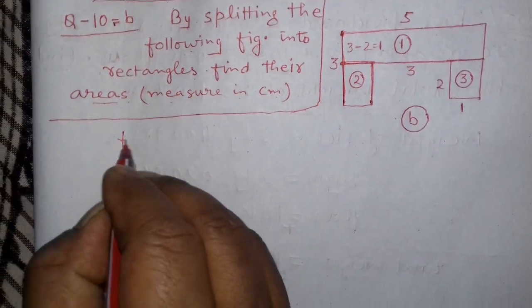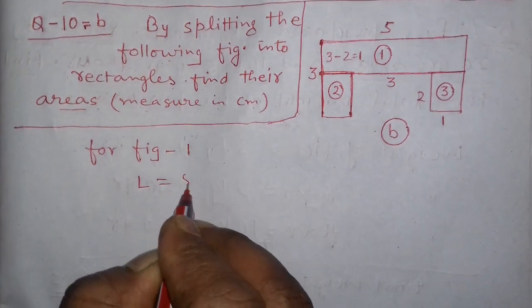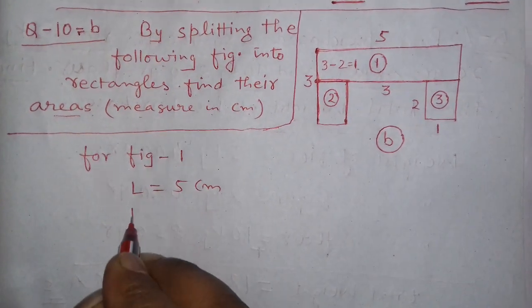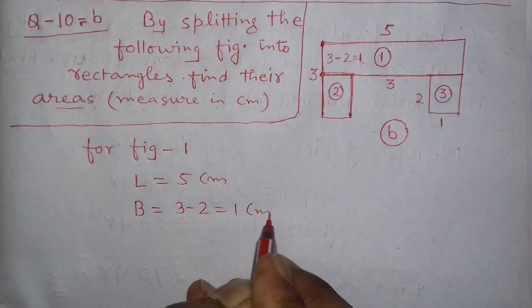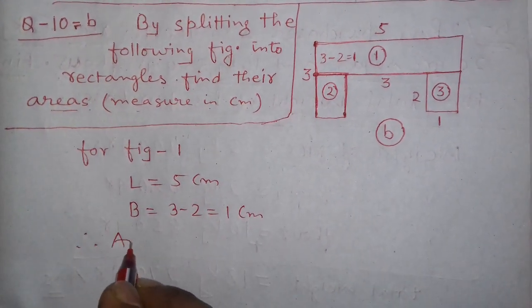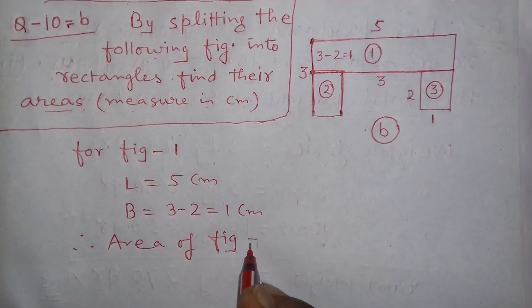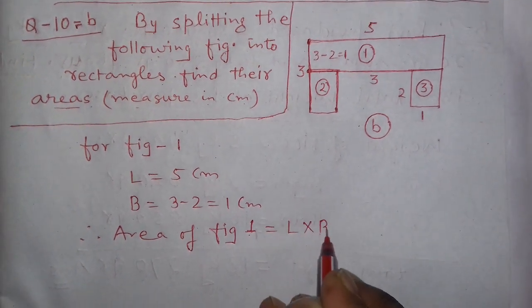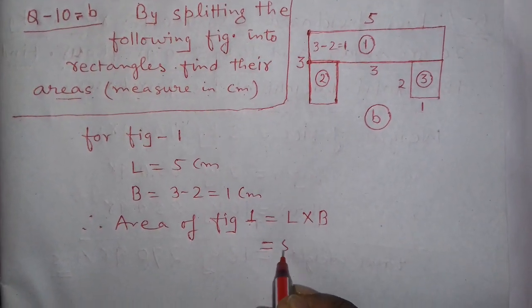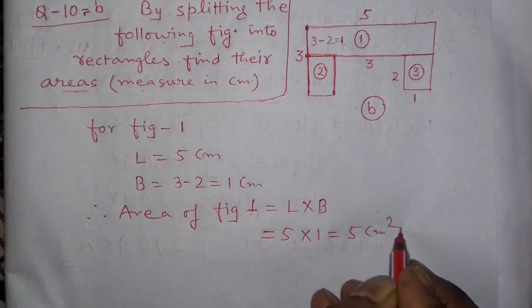So write for figure number 1: L is equal to 5 centimeter and B is equal to 3 minus 2, that is 1 centimeter. Therefore, area of figure number 1 is equal to L multiply B. You see here, 5 multiply 1, that is 5 centimeter square.